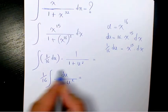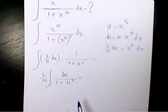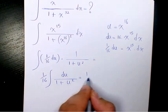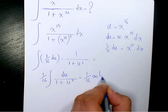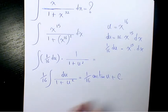When you find the integral of this part, as you know, it's going to be arctan u. We had it many times before, so the answer is going to be 1 over 16 arctan u plus a constant number.